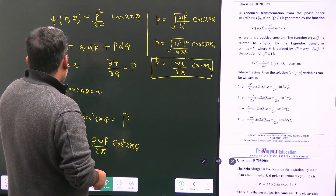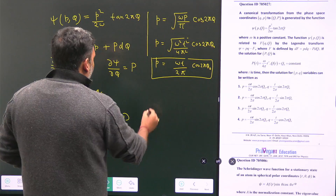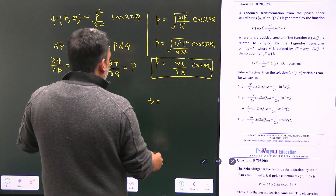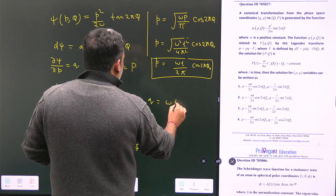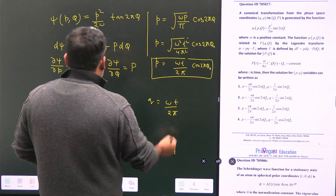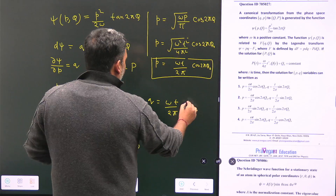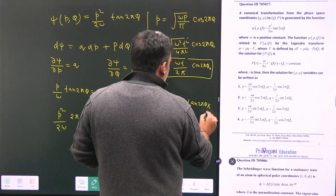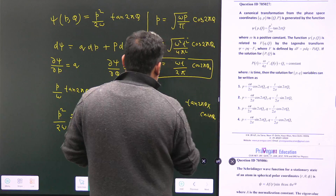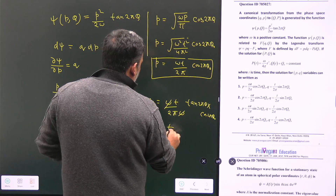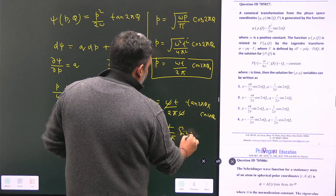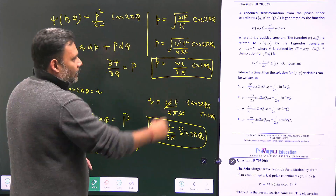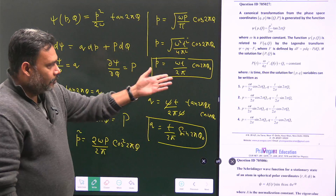Substituting back to find small q: using ∂ψ/∂p = q, we get q = (ωt/2π) · sin(2πQ₀) · cos(2πQ₀), which gives q = (t/2π) · sin(2πQ₀). This confirms the second part, and we can verify option number one is correct.